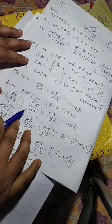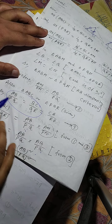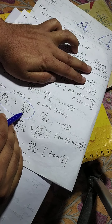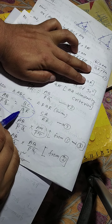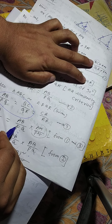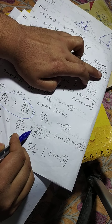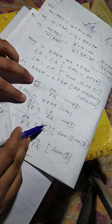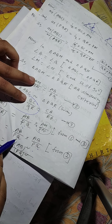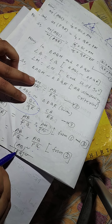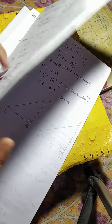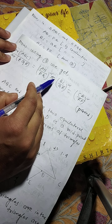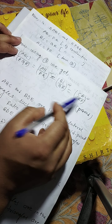From equation 1, area of ABC by area of PQR equals BC into AM by QR into PN. Replacing BC by QR with AB by PQ (since BC by QR equals AB by PQ from equation 3), and replacing AM by PN with AB by PQ from equation 2, we get AB squared by PQ squared. Using equation 3, area of ABC by area of PQR equals AB by PQ whole square, equals BC by QR whole square, equals CA by RP whole square. Proved.